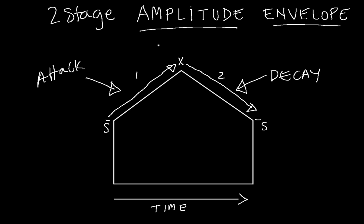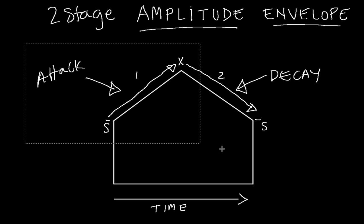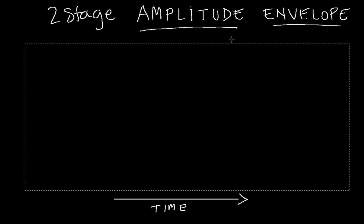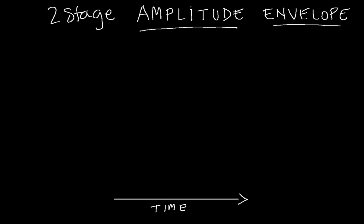A two-stage amplitude envelope: stage one the attack, stage two the decay. The angle coming up and the angle coming back down tells us the time — how fast the attack is and how fast the decay is. Now let's get this absolutely clear. There's time along the bottom, and each of these increments is a tenth of a second.